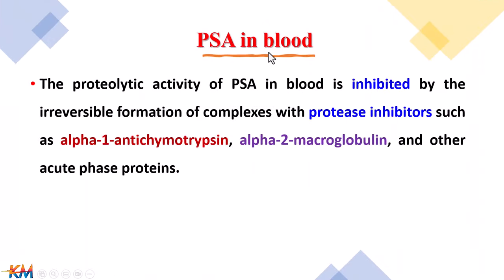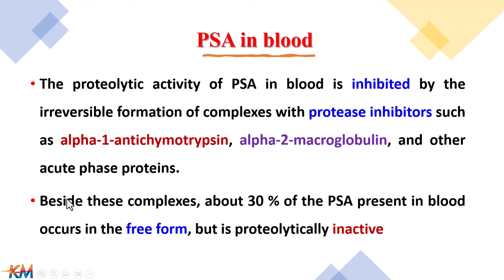PSA in the blood: as mentioned, PSA is a proteolytic enzyme. If PSA performed this activity in the blood, it would be dangerous. Therefore, the proteolytic activity of PSA in the blood is inhibited as PSA binds with protease inhibitors, including alpha-1 anti-chymotrypsin and alpha-2 macroglobulin and other acute phase proteins. Alpha-1 anti-chymotrypsin and alpha-2 macroglobulin are more important. About 30% of PSA is present in the blood as a free form, which is not bound with protease inhibitors. This free form is also inactive and cannot perform its proteolytic activity in the blood.